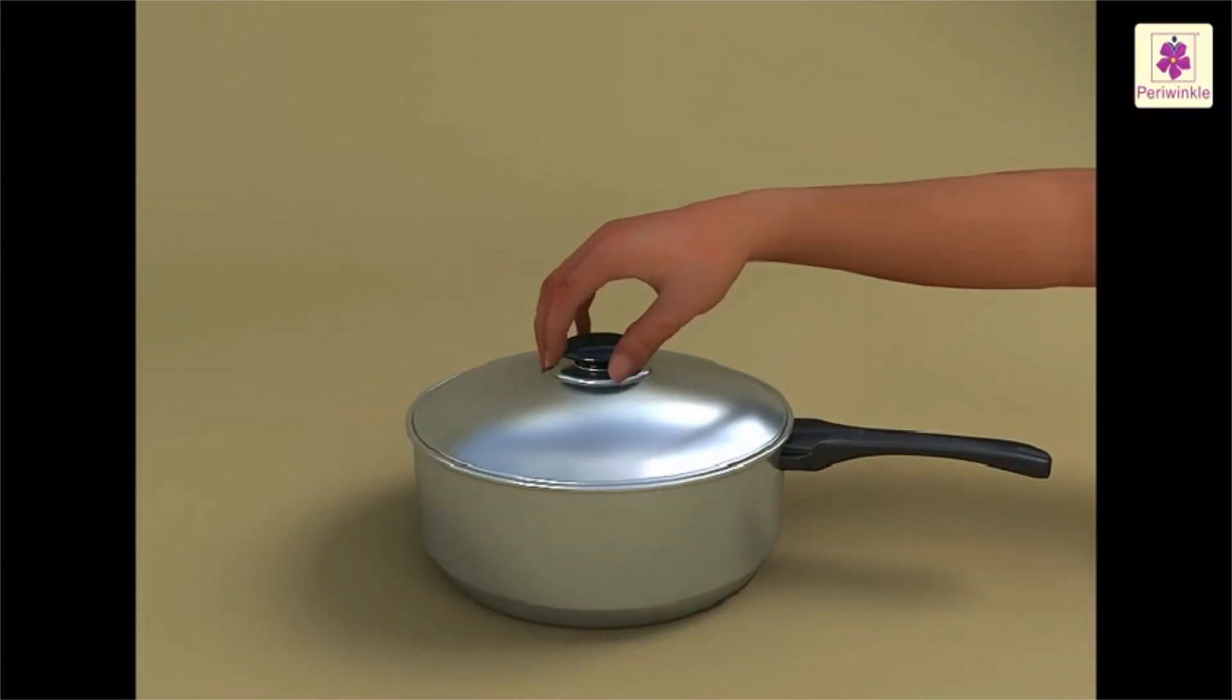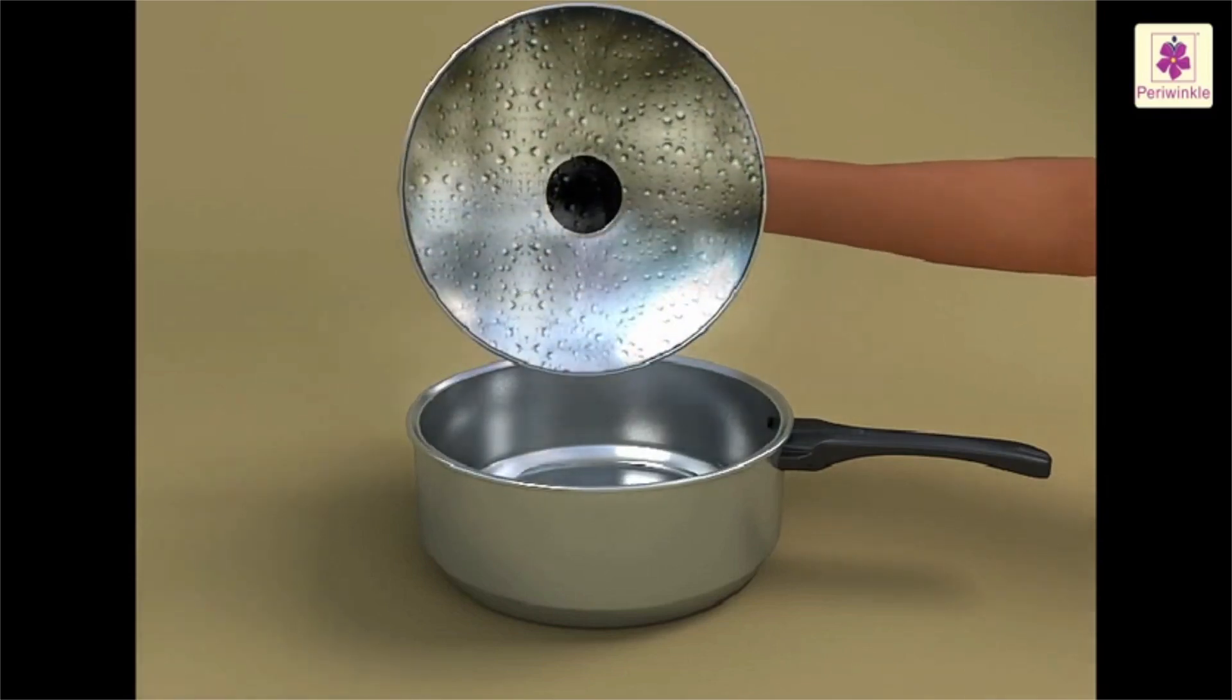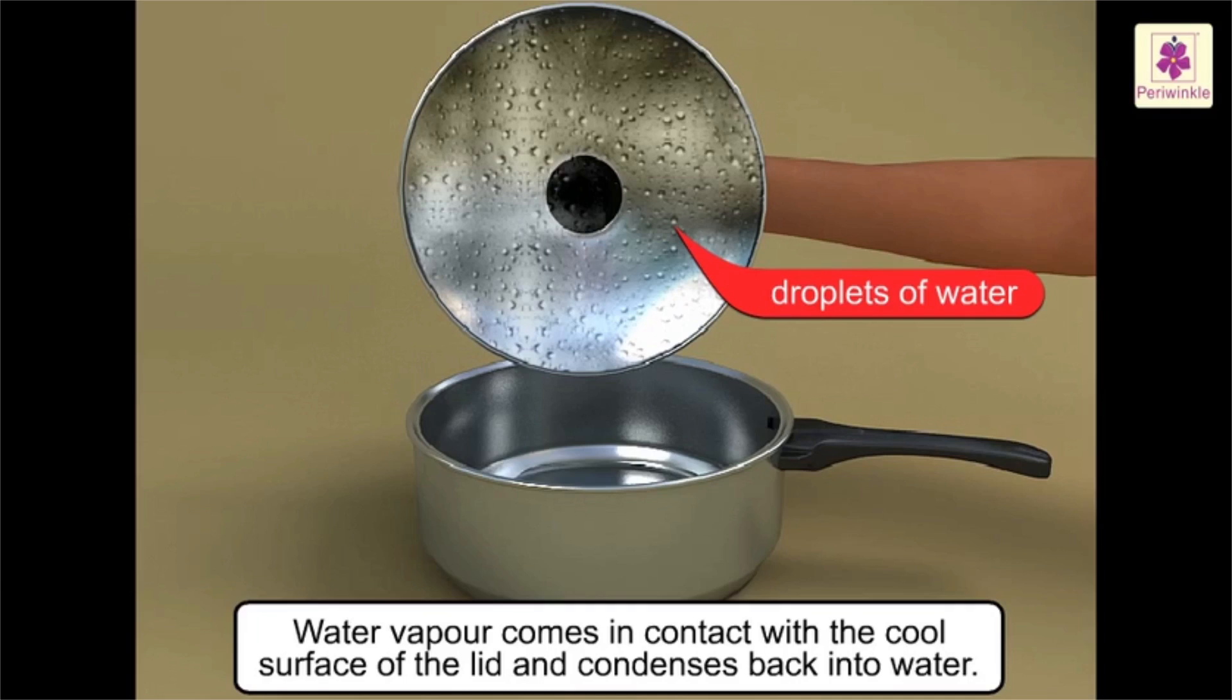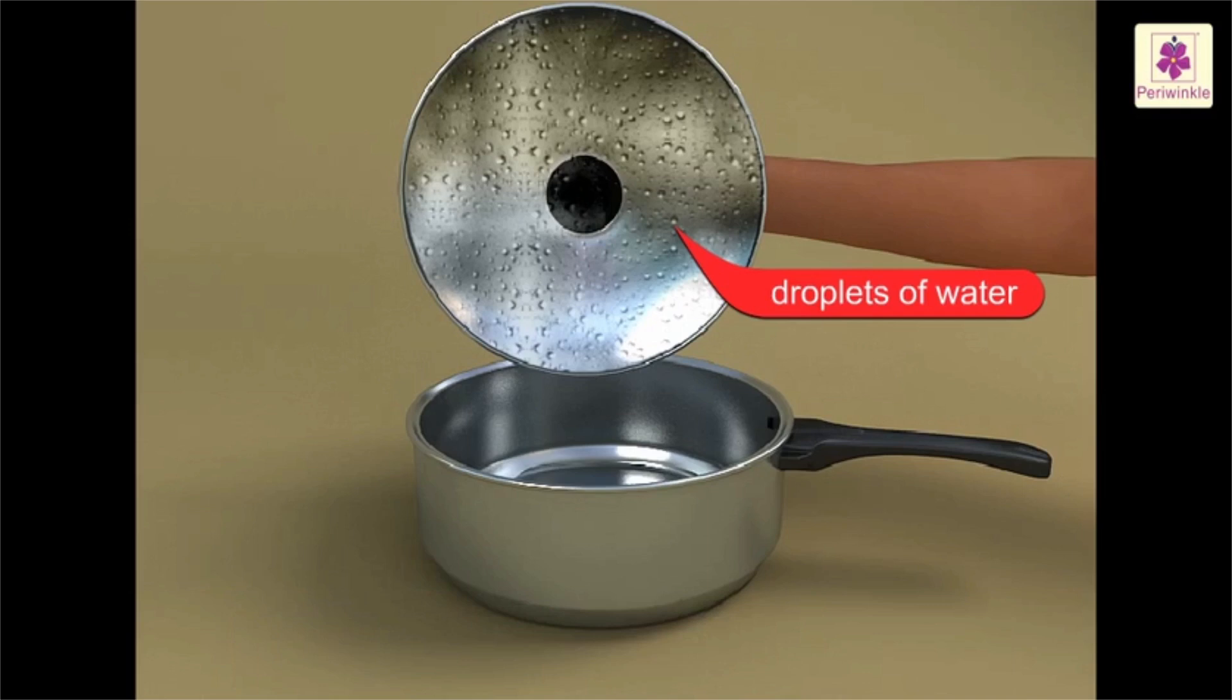Now remove the saucepan from the fire. Cover it with a lid. After a few minutes, lift the lid carefully. Look at the underside of the lid. You will find droplets of water. Water vapor comes in contact with the cool surface of the lid and condenses back into water. This is called condensation.